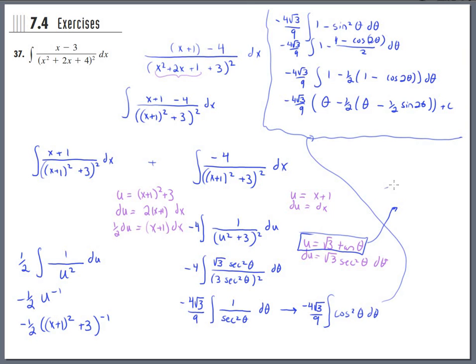And we said tangent of theta equals u over square root of 3. So that would be opposite and adjacent, and then the remaining side there will become square root of u squared plus 3, which will allow us to rewrite some of these things.